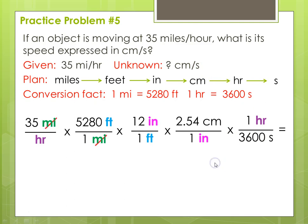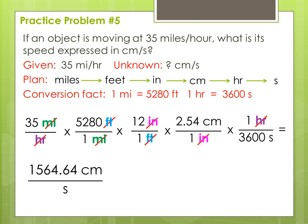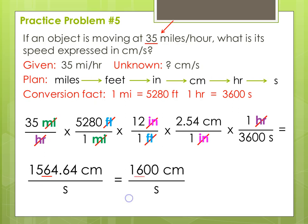Cancel units: miles divided by miles goes away, feet divided by feet goes away, inches divided by inches goes away, and hours divided by hours goes away. That leaves us with centimeters per second. When we multiply it all out, we get 1,564.64 centimeters per second — that's too many digits. Our given had two significant figures. The second significant figure is the 5, and the number immediately following it is a 6 — five and above, you give it a shove — so we round to 1,600 centimeters per second. The second significant digit is the 6. Because there's no decimal, the trailing zeros are not significant.